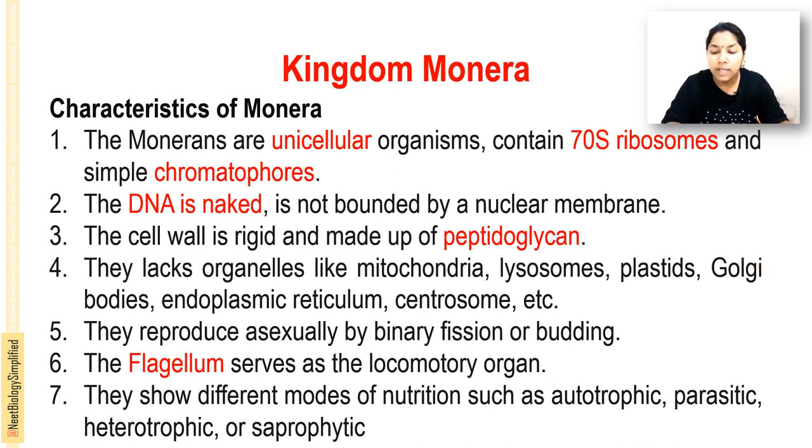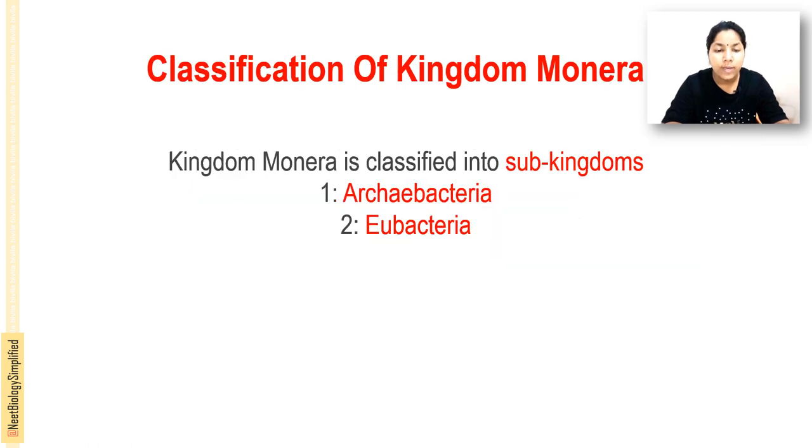Monerans show different modes of nutrition. Some are autotrophic - they produce their own food. Some are heterotrophic - they depend on other organisms for food. Some are parasitic - they depend on other organisms and get nutrients from them. Some are saprophytic - they live on dead organic matter and get nutrients from that.